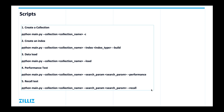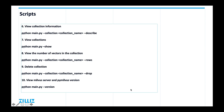Our command scripts are very easy to understand. For example, if you want to create an index, you just need to specify the collection and the index tab and then add build. Or if you want to test the recall rate, you also need to specify the collection and search param and then add the recall parameter. Other commands are all the same — it's very concise to understand.